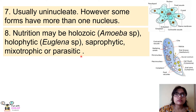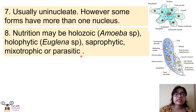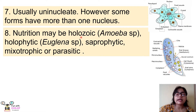The eighth point is about nutrition — how protozoans derive nutrition. Recalling the definition, protozoans are heterotrophic organisms with different types of eating behavior. The first type is holozoic nutrition, found in Amoeba — holozoic means these animals feed on other smaller plants or animals.